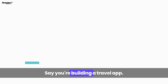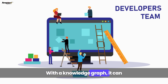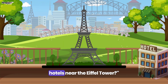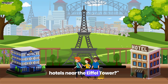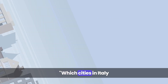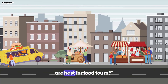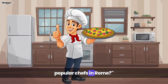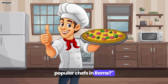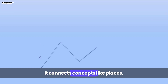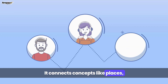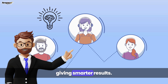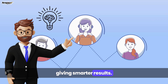Say you're building a travel app. With a Knowledge Graph, it can answer: what are the top-rated hotels near the Eiffel Tower, which cities in Italy are best for food tours, who are the most popular chefs in Rome. It connects concepts like places, services, reviews, and people, giving smarter results.